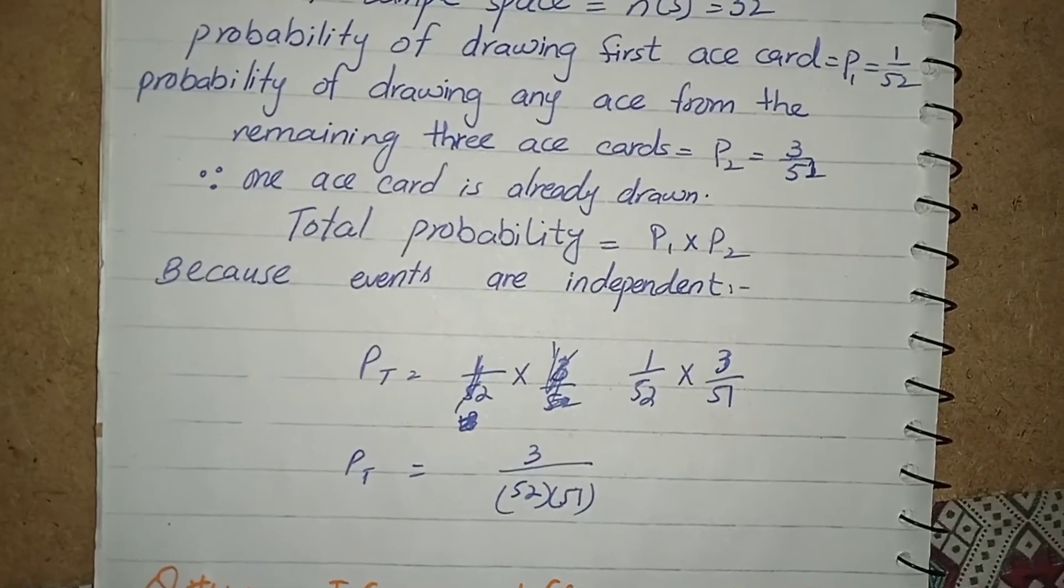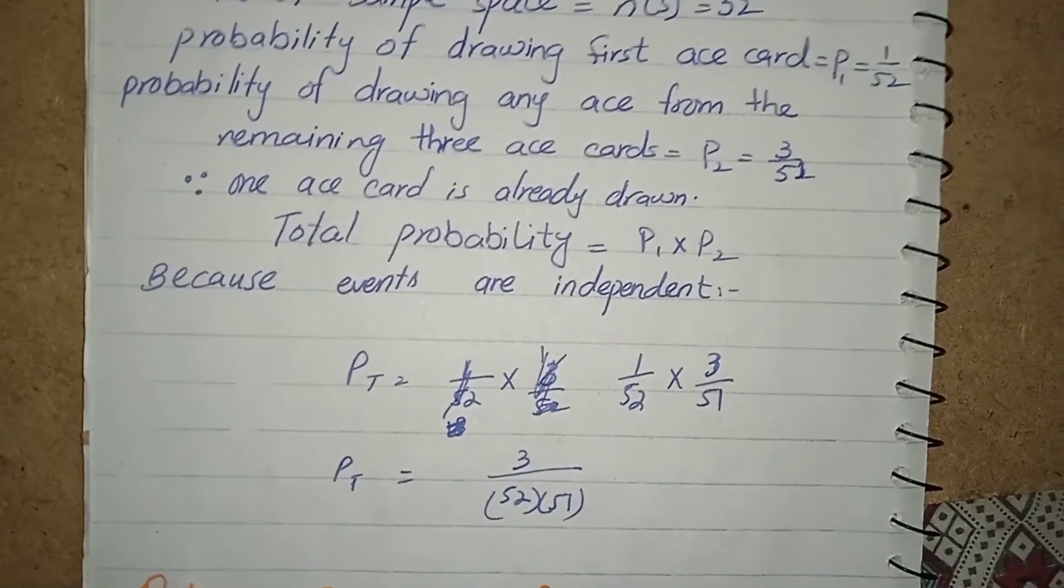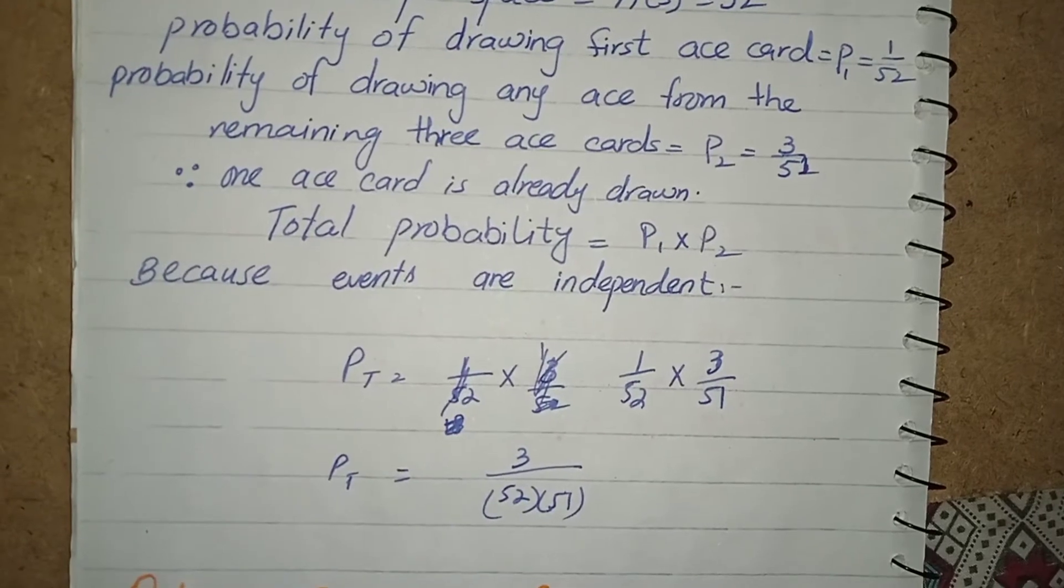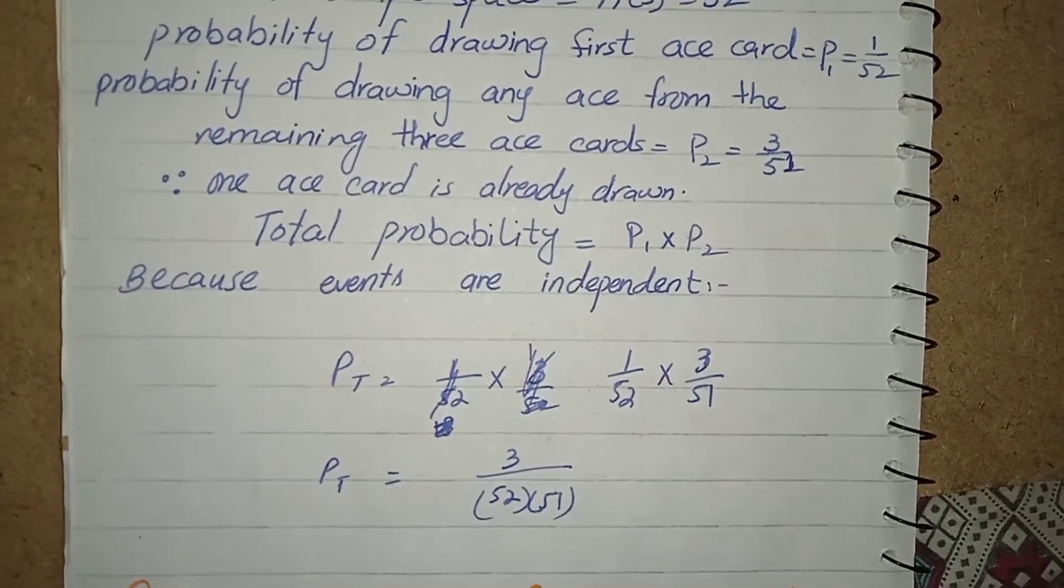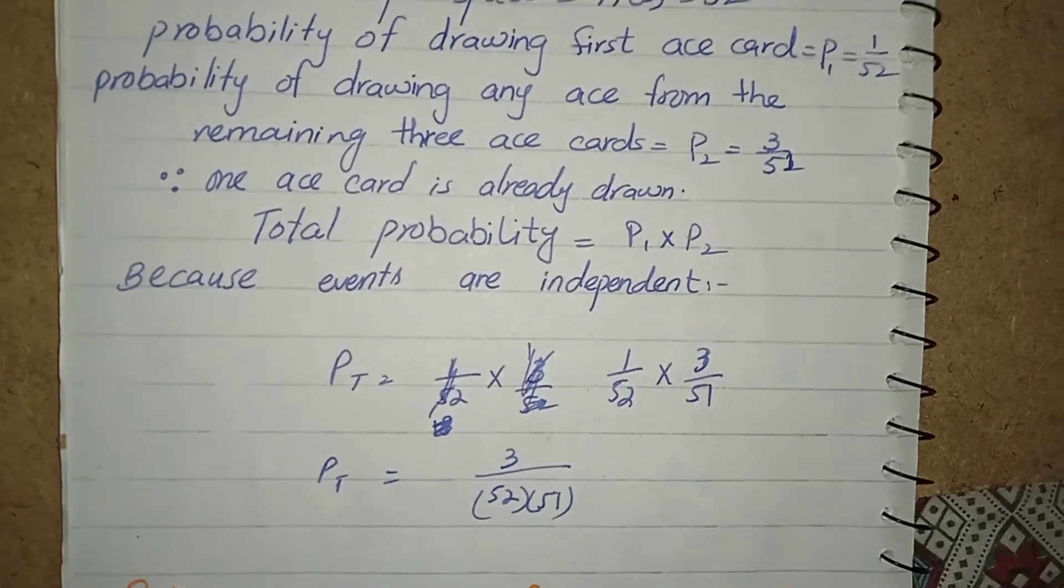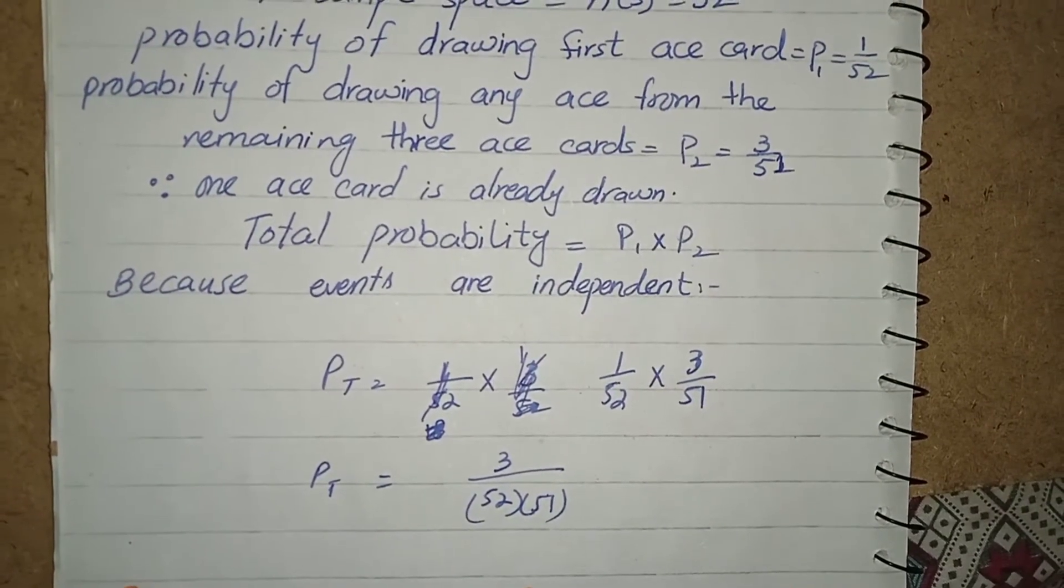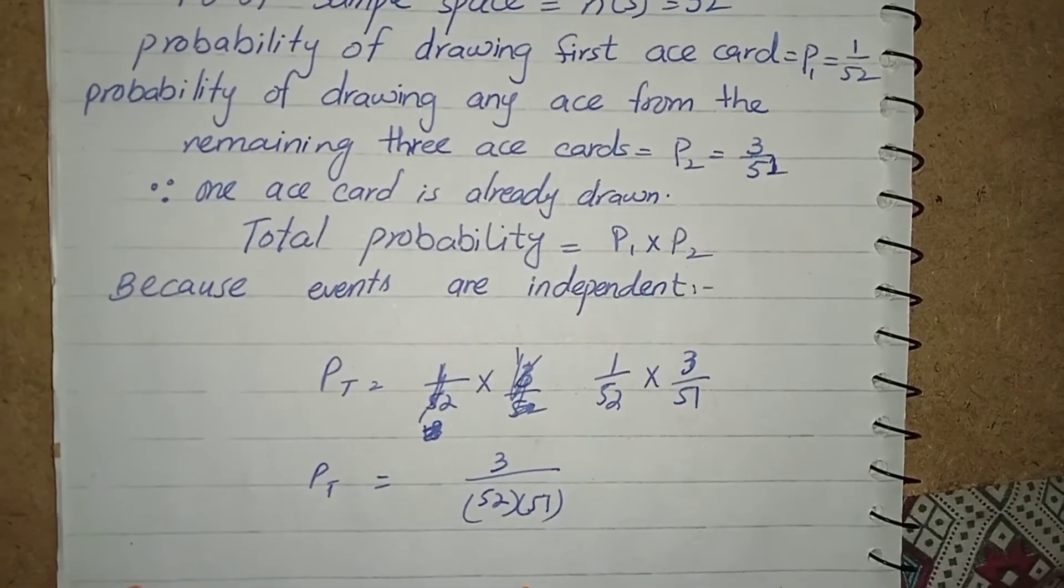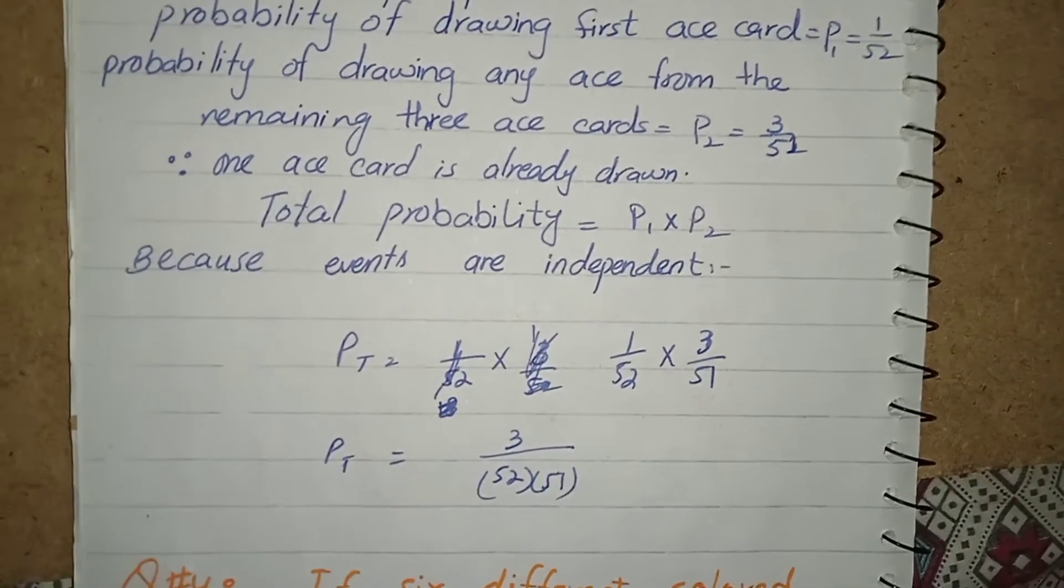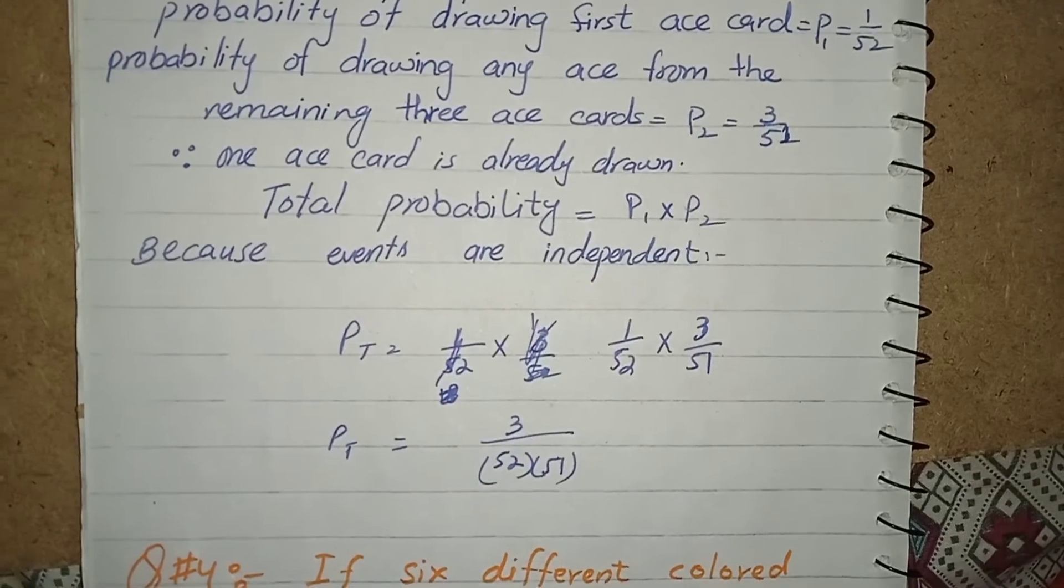Independent is that because in this way, events are independent because at first I draw first ace of spade and then I draw ace of spades from the remaining 3 of ace of spades. So the both events are not dependent and also not mutually exclusive. So I multiplied them to get the answer.